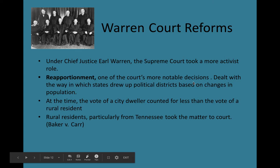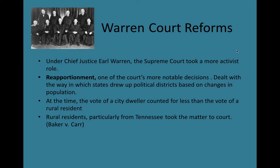Hey guys, welcome back to 15-1 part 2. So when we have a Supreme Court Chief Justice that is significant and there are a lot of important rulings that come out of his time as Chief Justice, we refer to that term by his last name. So we have the Marshall Court early during Jefferson's presidency, and he's the one who was there for Marbury v. Madison and Gibbons v. Ogden and a whole bunch of early court rulings. And we have the Warren Court, which is the big period of time in the middle 20th century when Earl Warren was Chief Justice and took a rather activist approach with a lot of forward-thinking rulings.